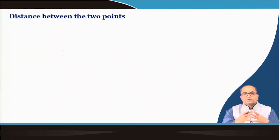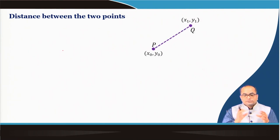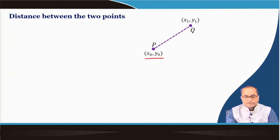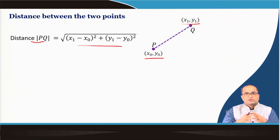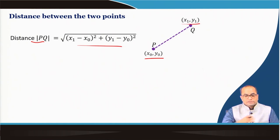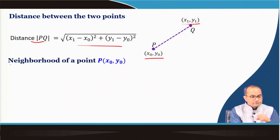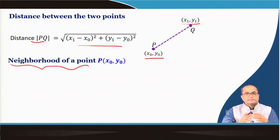Now we define a few terminologies that will be used in further discussion of functions of two variables. One we need is the distance between two points in the xy-plane. Suppose we have a point (x₀, y₀) and another point (x₁, y₁) in the xy-plane. The distance between the two points p and q is: sqrt((x₁ − x₀)² + (y₁ − y₀)²).